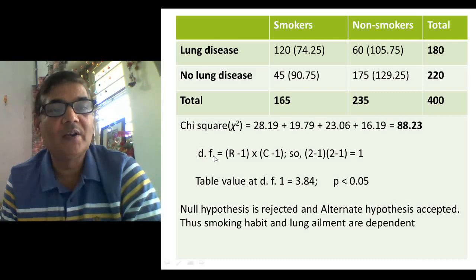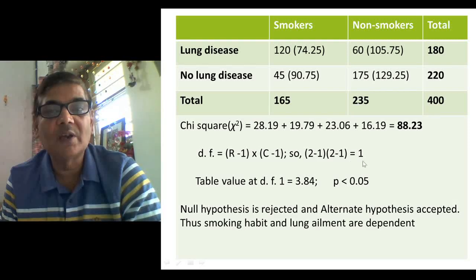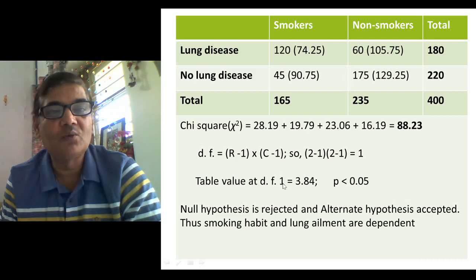The next step is to find the degree of freedom. For the R into C contingency table, degree of freedom is obtained as (R minus 1) into (C minus 1), where R is the number of rows and C the number of columns. In the present case, there are two rows and two columns, so (2−1) × (2−1) = 1. At 1 degree of freedom, you look up the table value, which comes to 3.84.